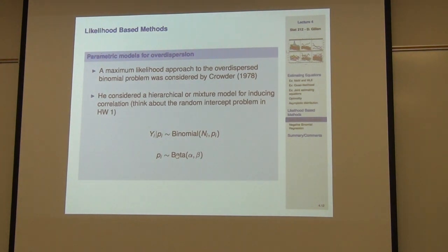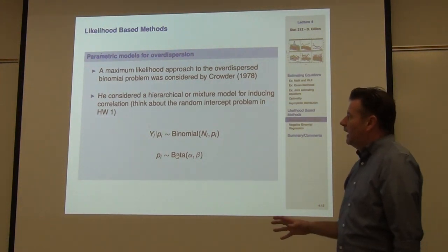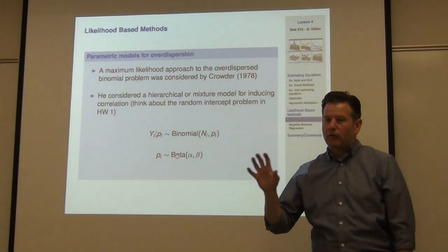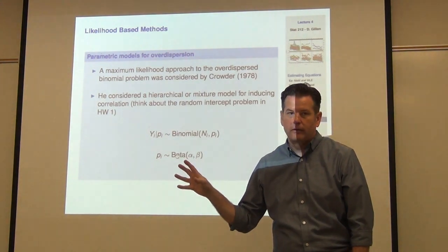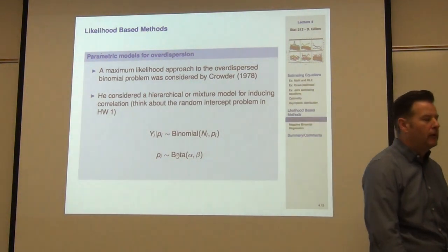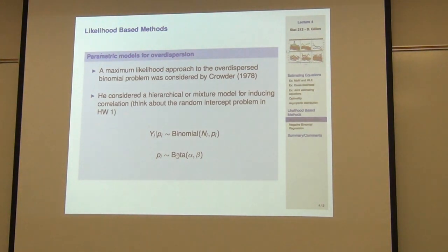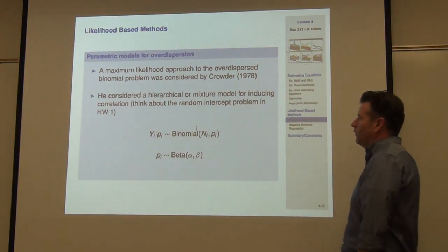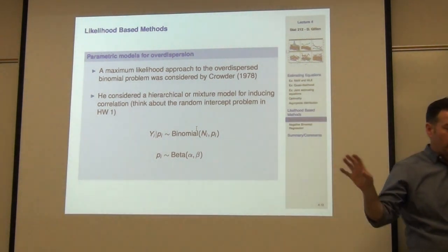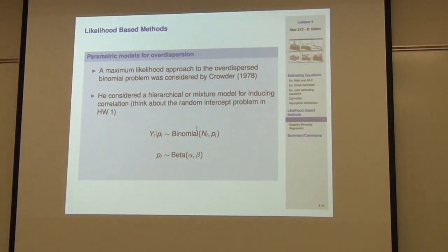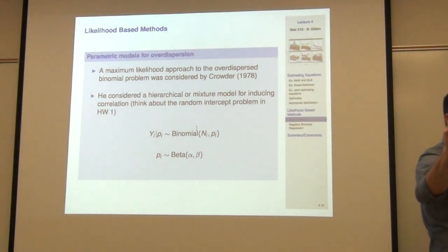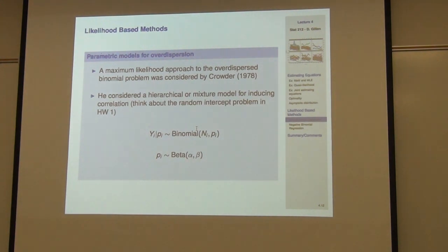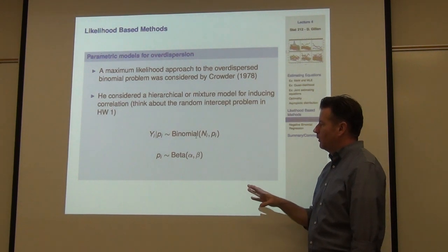Why would anybody consider such an approach if I've already talked about fixing the variances with the robust variance estimator? Well, they're doing it because they can gain back efficiency if they're right in the specification of the model. Prouder was kind of one of the first ones to do this — also one of the first people to come up with the two-moment estimating equations. He said you can think about this as an estimating equation, but you could also build in this correlation in grouped binomial samples by considering a hierarchical or mixture model to induce that correlation.